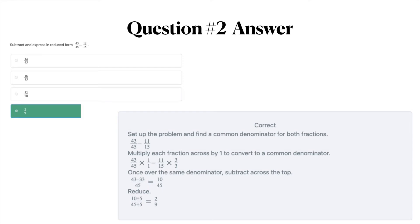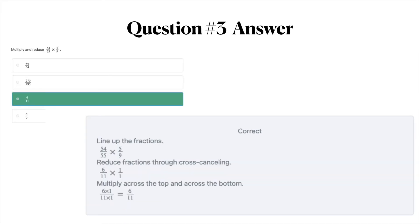The answer to question number three is C, 6 over 11. First you're going to line up the fractions. Then you'll reduce the fractions through cross cancelling. As you can see in this answer explanation. Finally you're going to multiply across the top and across the bottom.